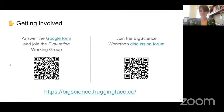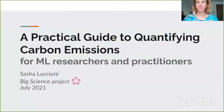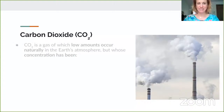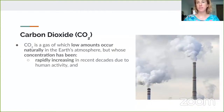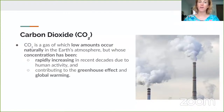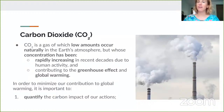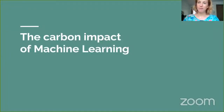Hi everyone. My name is Sasha Luciani and I'm one of the co-chairs of the carbon footprint group of BigScience. Today I want to talk to you about the practical guide that we've made for quantifying carbon emissions. CO2 is a gas that occurs naturally in low amounts in the Earth's atmosphere, but whose concentration has been rapidly increasing in recent decades, contributing to the greenhouse effect and the overall global warming of the Earth. In order to minimize our contribution to global warming as a community, it's important to quantify how much carbon we're emitting with our daily actions — including our professional and research choices — and to reduce or mitigate that impact.